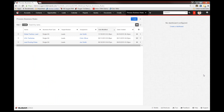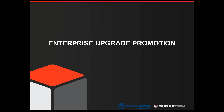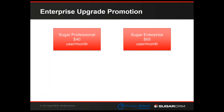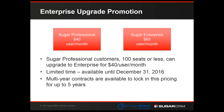In order to make sure we don't run out of time for questions, we're going to move on. If you have any additional follow-up questions about Advanced Workflow, feel free to ask at the end, or we'd be happy to set up a one-on-one demo with you. Before Q&A, there's one other thing on our agenda: talking about a promotion that Sugar is running right now. The list prices are $40 per user per month for Professional and $65 per user per month for Enterprise. Sugar has a promotion running right now where Sugar Professional customers of 100 seats or less can upgrade to Enterprise for $40 per user per month — paying the list price of Professional but getting Sugar Enterprise. This is a limited-time offer, available until December 31, 2016.